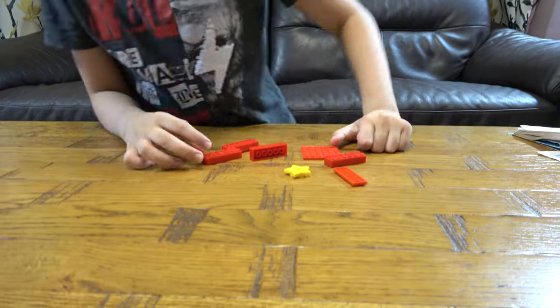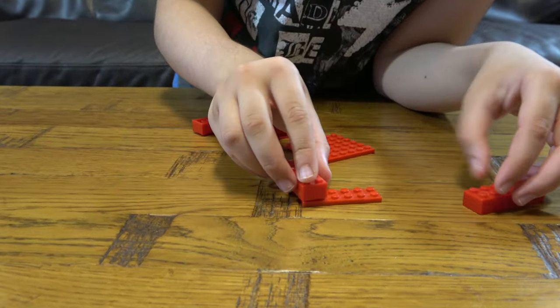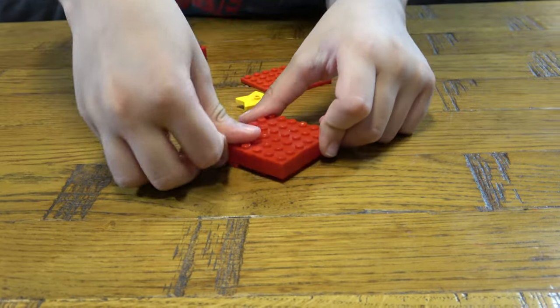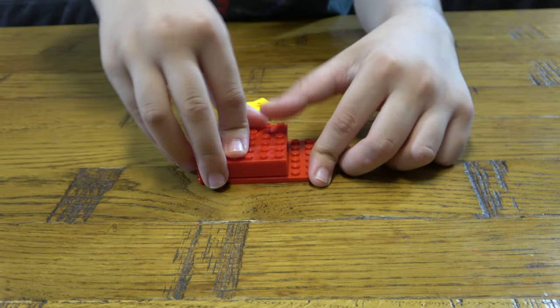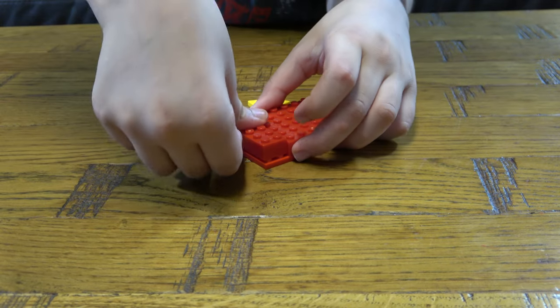So let's start. The first thing we need to do is get this. We put three of these on it, like this. Get this, put it there like that. Put this here.